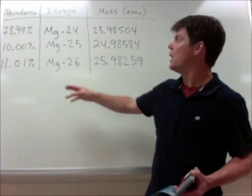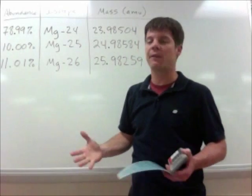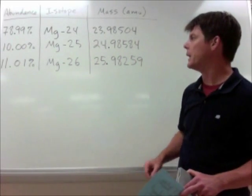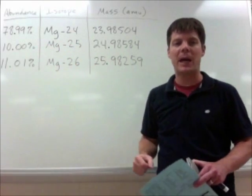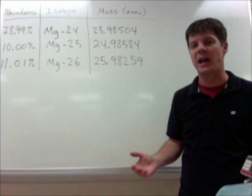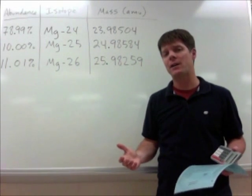They are actually found at different levels. Magnesium-24 makes up 78.99% of all magnesiums that are present on our planet. Magnesium-25 makes up 10%. Magnesium-26 makes up just over 11%.